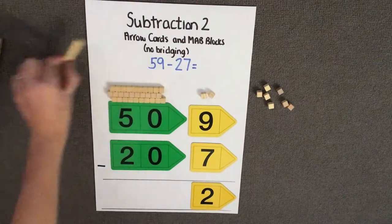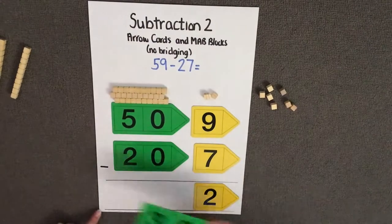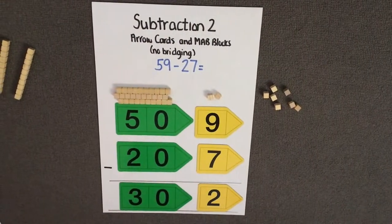That's 1 lot of 10, 2 lots of 10, and that leaves 3 tens. We can use the 30 arrow card to represent our 3 tens or 30.